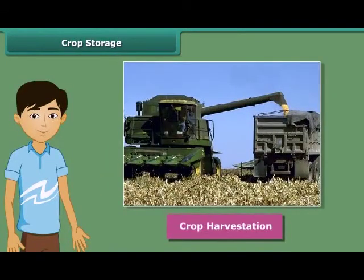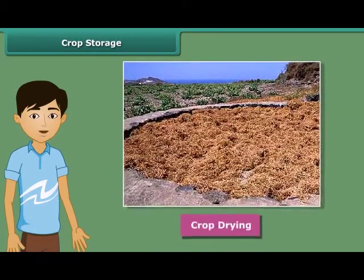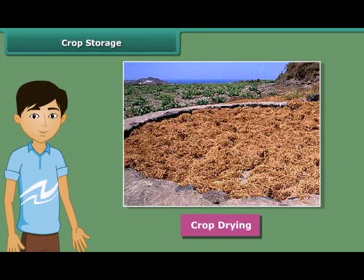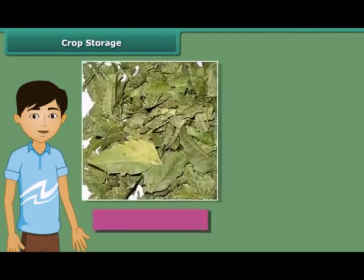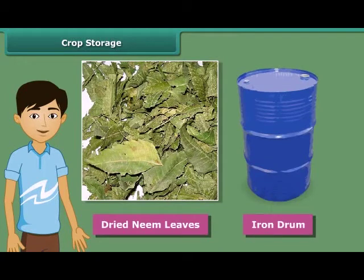Once harvesting is done, crops are stored in huge storages. We should keep some precautions because if the harvested grains are stored without drying, they may get spoiled or attacked by organisms and lose their germination capacity. So the grains should be properly dried in the sun to reduce the moisture in them. Farmers store grains in jute bags or metallic bins, but for large-scale storage, they use silos and granaries. People also keep dried neem leaves in an iron drum for storing food grains, as these protect the grains from pests and microorganisms.